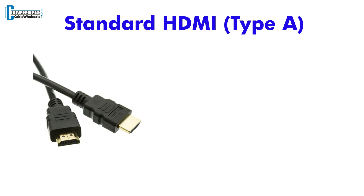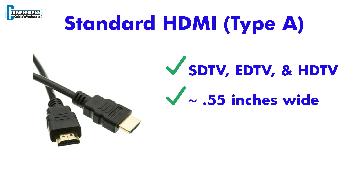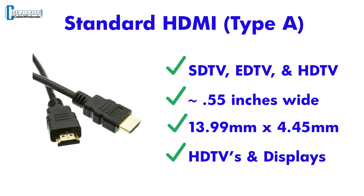A standard HDMI connector supports bandwidth to support all SDTV, EDTV, and HDTV modes. It is about 0.55 inches wide. The connector dimensions are 13.9 mm by 4.45 mm. This cable is most commonly used for HDTVs and displays.